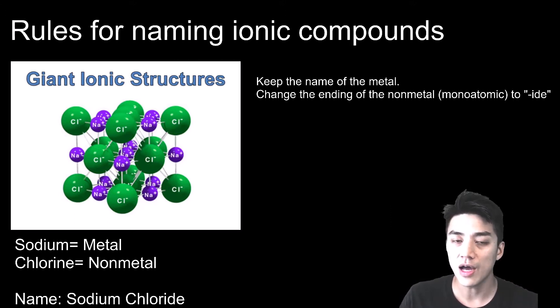So when you have sodium and chlorine bonding together you have a compound known as sodium chloride. So you keep the name of the metal which is sodium and chlorine becomes chloride.